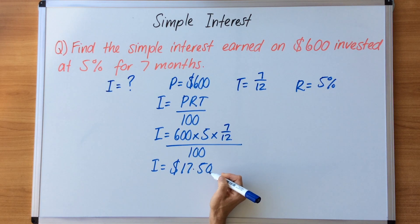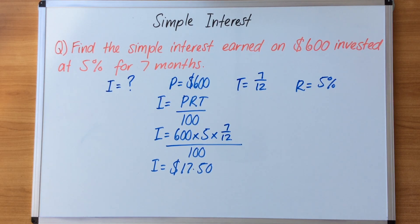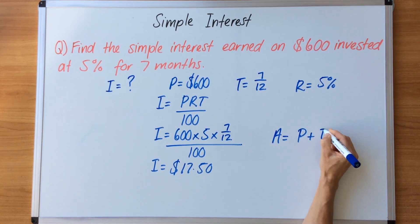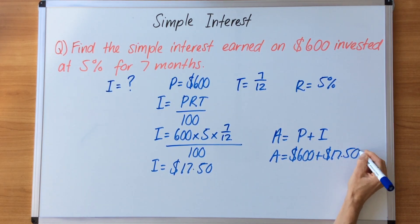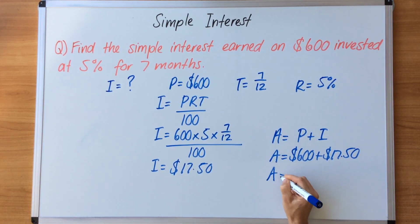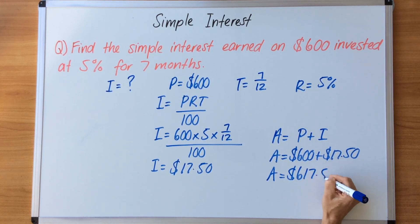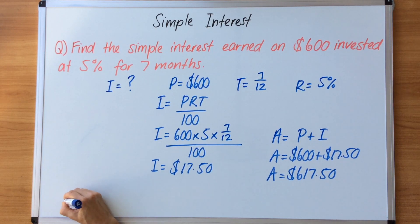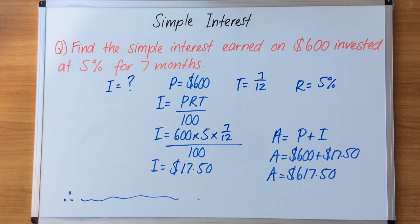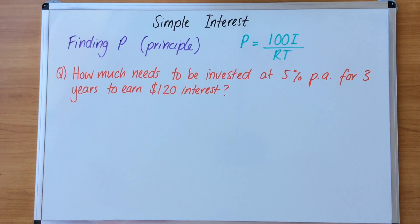If we want to know the total amount at the end, we add the original principal and the interest earned: A equals principal plus interest, so A equals $600 plus $17.50, giving $617.50. A worded question needs a worded answer — depending on what they're asking, write a 'therefore' statement with the correct answer aligned with the question.